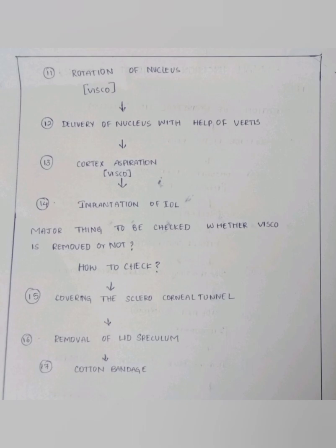The thirteenth step is cortex aspiration. Cortex aspiration is done with the help of Simcoe's two-way irrigation-aspiration cannula. This instrument consists of two pores — the aspirating pore and the irrigation pore. The aspiration pore is present on the anterior side and the irrigation pore is present on the side. This helps in cortex aspiration.